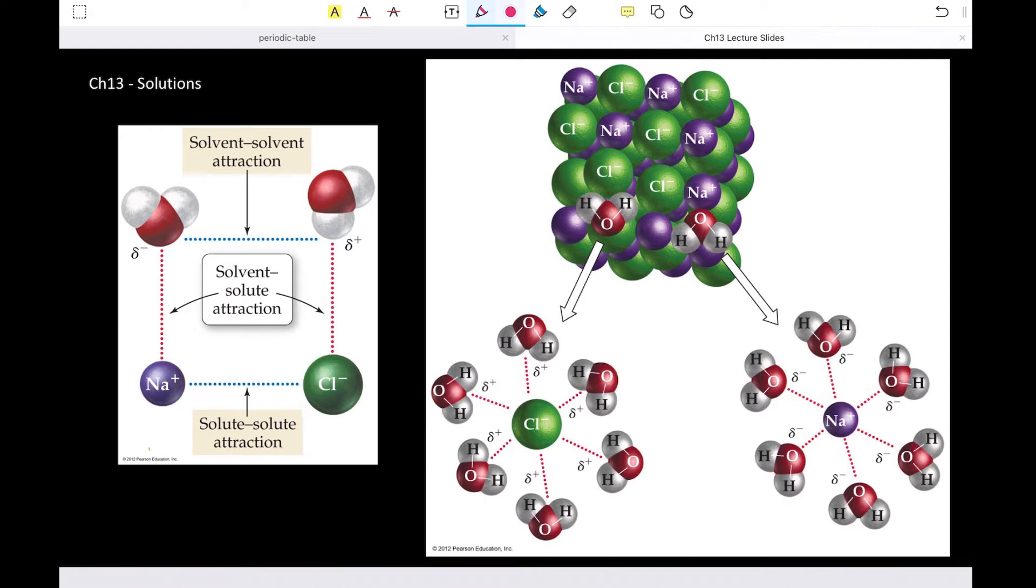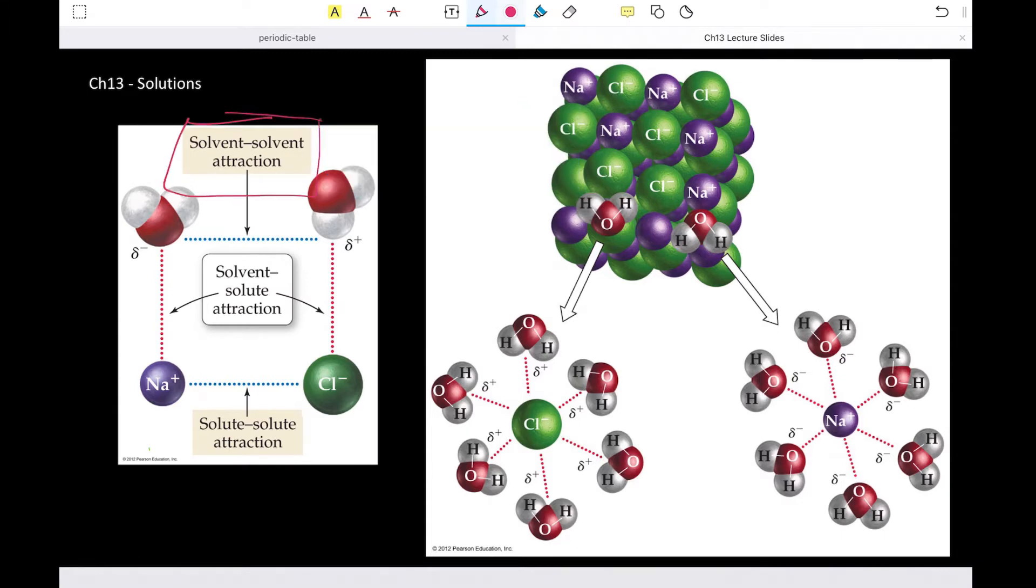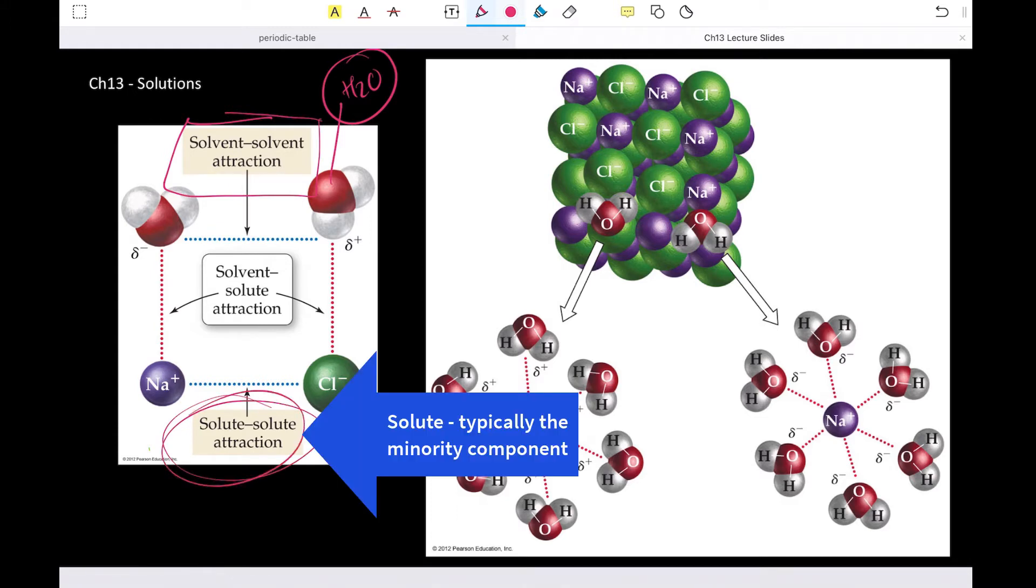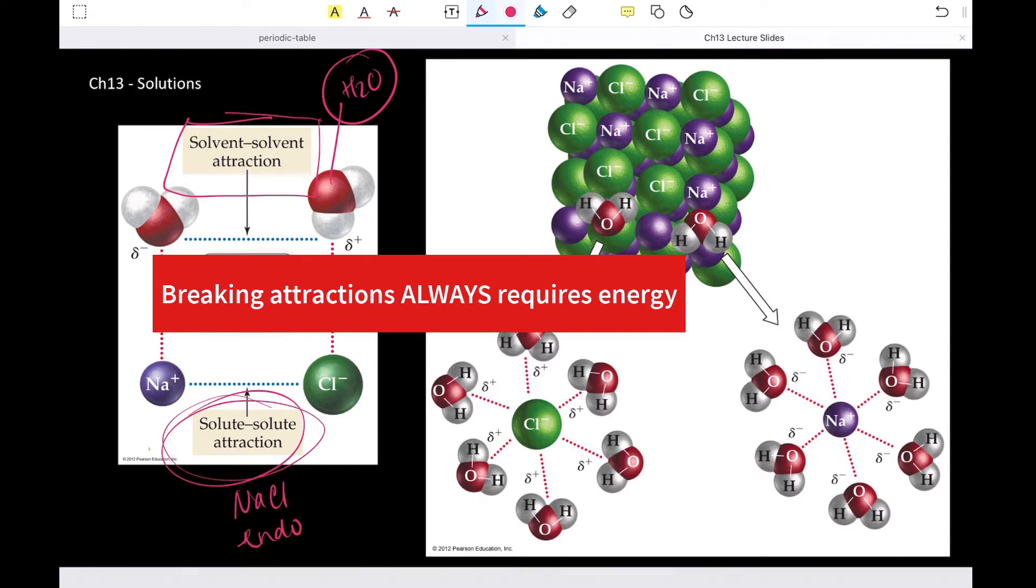First let's talk about solution formation at the particle level. Clearly we have solvents and solvents have attractions between them. So this is water molecules and there is an attraction between one water molecule and its neighboring water molecule that's called the solvent-solvent attraction. It binds those two things together and in order for something to dissolve those two particles have to be separated. Likewise we have a solute-solute attraction, so here we have sodium chloride those sodium ions are attracted to those chloride ions and again that attraction has to be broken or overcome in order for dissolving to occur. Both of these processes are endothermic in that they require energy in order for those attractions to be broken.